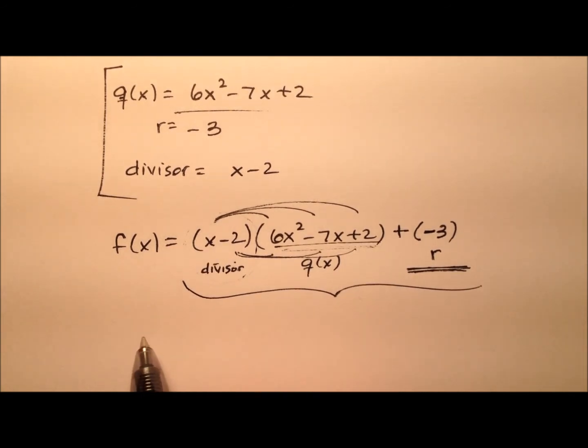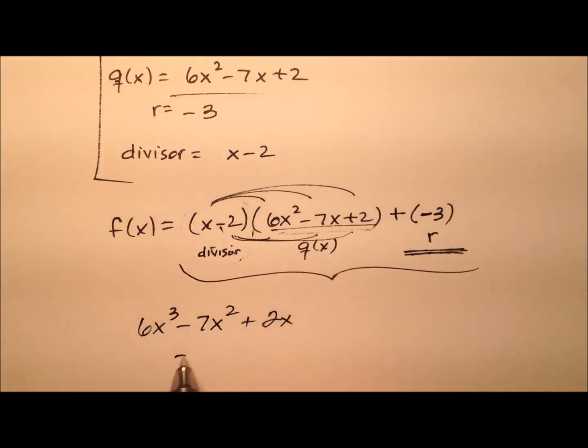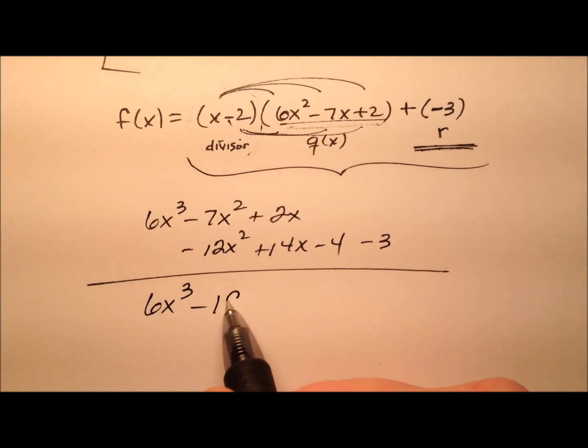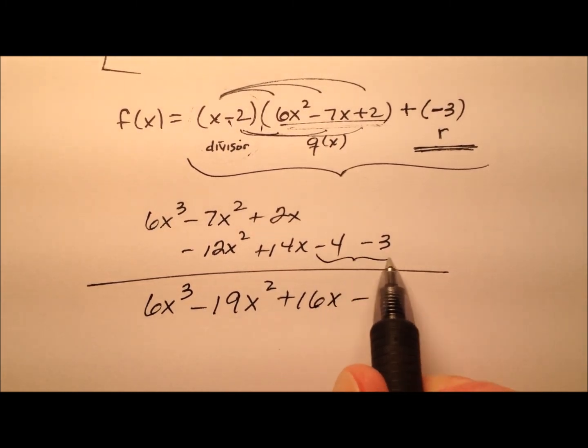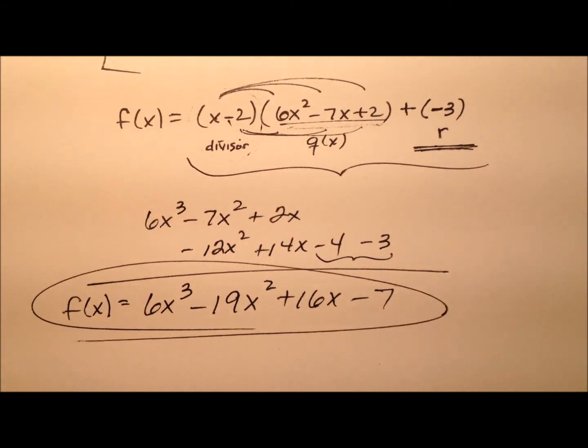So x times these terms will give me 6x³ minus 7x² plus 2x. And then when I multiply by the negative 2, I'll have negative 12x² plus 14x minus 4. And then there's my remainder here of negative 3. So I'll kind of just put it all together. So 6x³ minus 19x² plus 16x minus, and it looks like minus 7. And that is our original function right here.